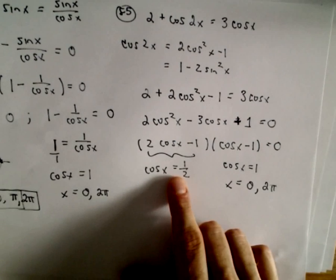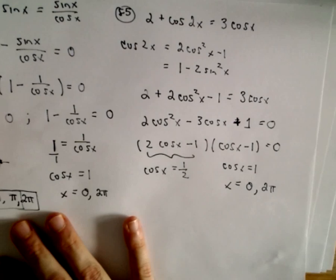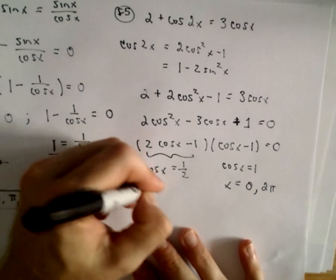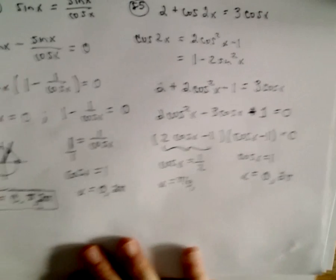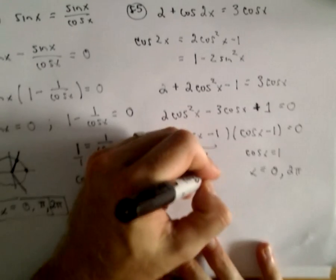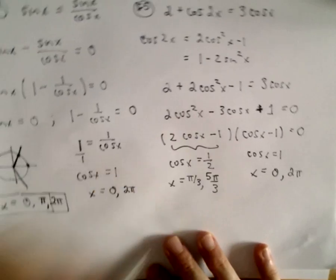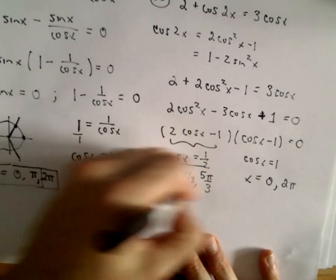Cosine of x is going to equal 1 half. Let's see, cosine is going to equal 1 half at the angle pi over 3. That'll be our solution in the first quadrant and then also down in the fourth quadrant. That's going to be at 5 pi over 3, and those will be our four solutions.